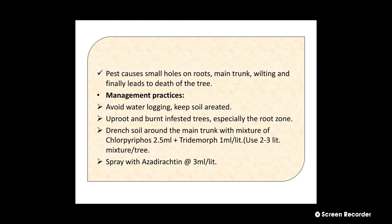Management practices: avoid waterlogging and keep soil aerated. Uproot and burn infested trees, especially in the root zone. Drench soil around the main trunk with a mixture of chlorpyrifos 2.5 ml plus tridemorph 1 ml, using 2 to 3 liters per tree. We can also spray with azadirachtin, that is neem seed kernel extract, at the rate of 3 ml per liter. These are all about the major pests of the pomegranate. Thank you.